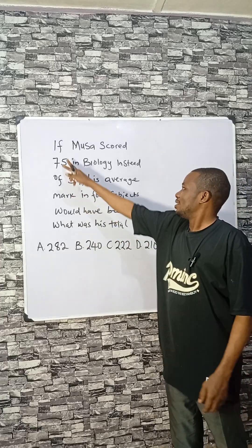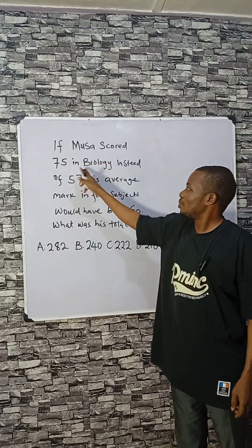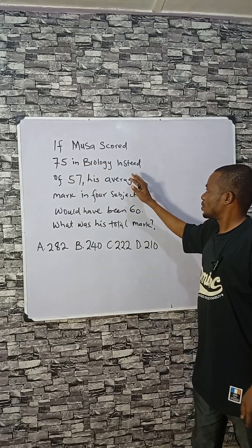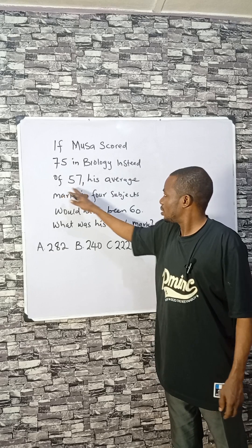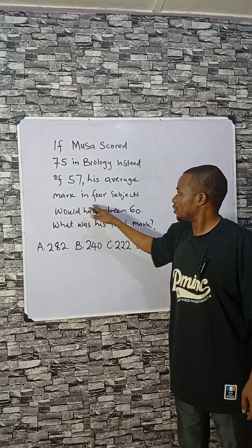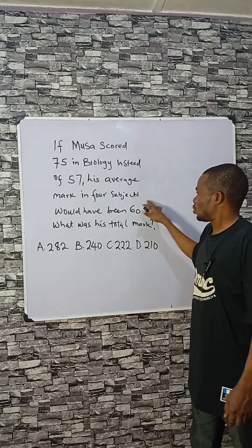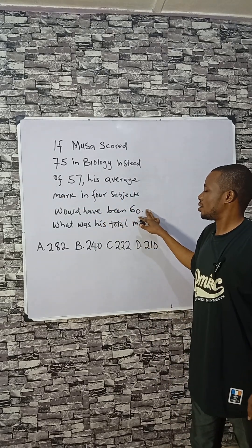Let's consider this: if Musa had scored 75 in biology instead of 57, his average mark in four subjects would have been 60.